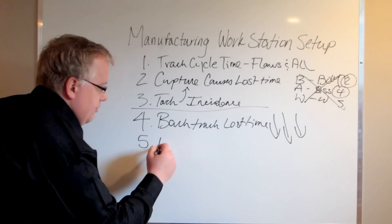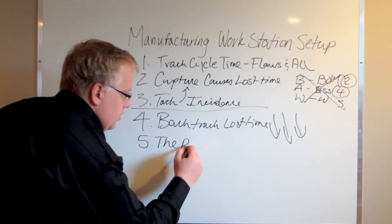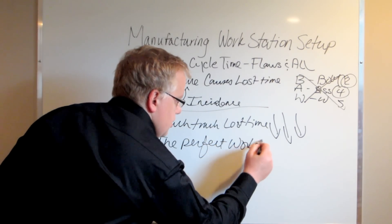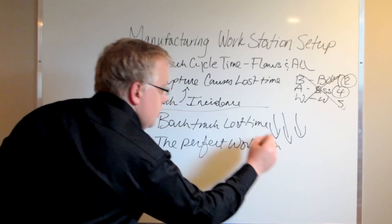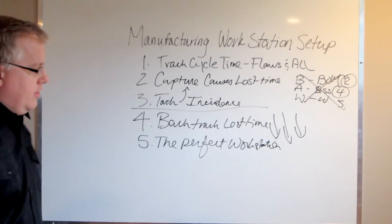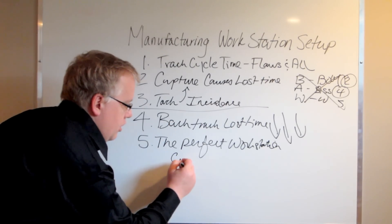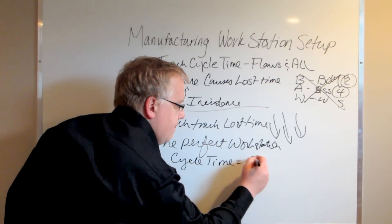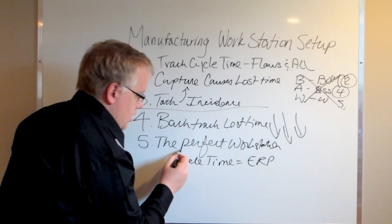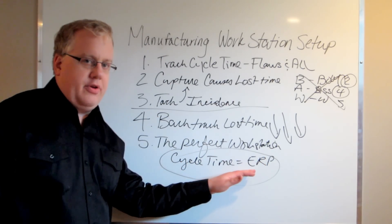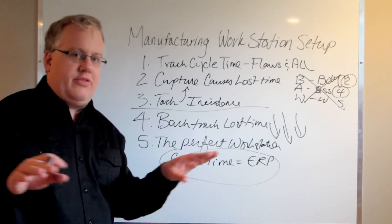The fifth stage is the perfect workstation. As soon as these cycle times go down, now you can use the cycle times that are coming out of this workstation in your ERP system. Doing this first allows you to track your cycle times through your ERP system because you basically raise the bar.